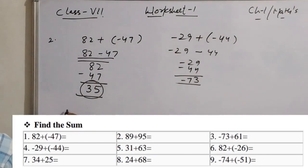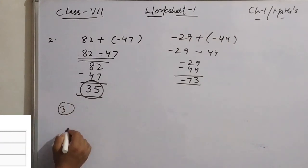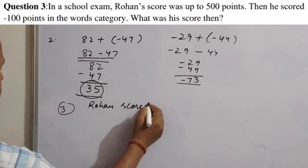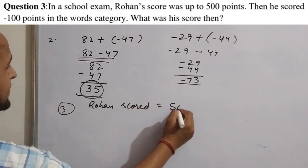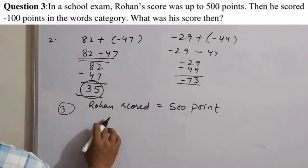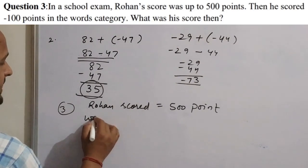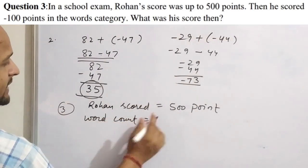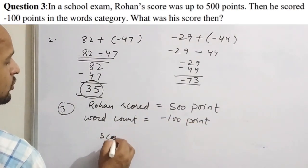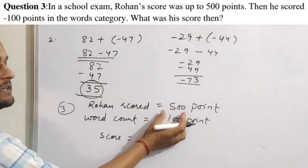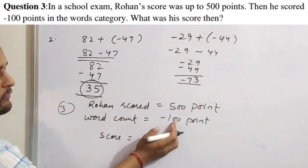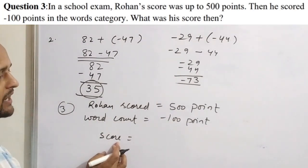Question 3: In a school exam, Rohan scored 500 points. He then scored minus 100 points in the word count round. The question asks what his actual score is after the word count round. So we need to calculate 500 plus (−100).